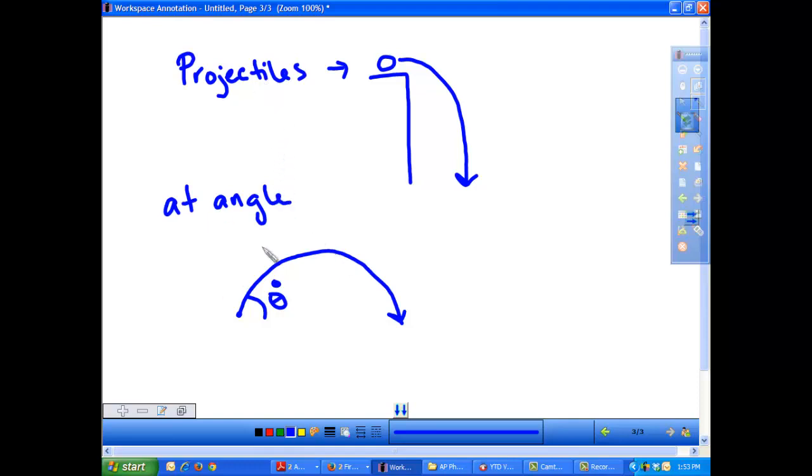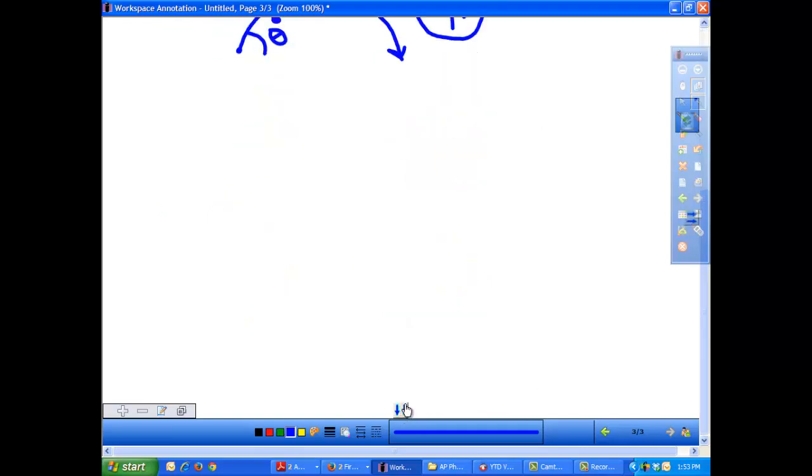Now, these angled projectiles are very similar to horizontal moving projectiles. The main difference is that now, with an angled projectile, you're going to have an initial y-velocity. We didn't have an initial y-velocity with horizontally fired projectiles. Their initial y-velocity was zero. But now we're going to have to worry about that. So, let's take a look and let's break down what's happening when an object is fired at an angle.